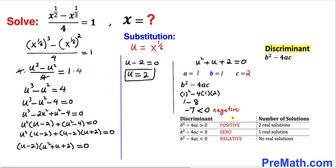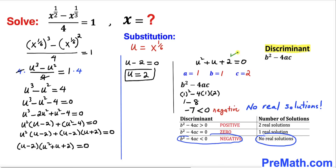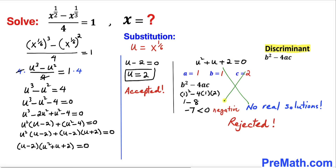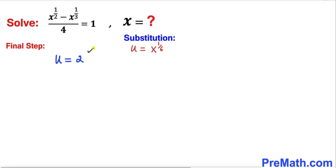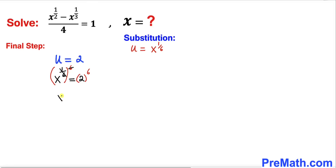Since the discriminant is negative 7, which is less than zero, there are no real solutions from the quadratic equation. We reject that case and accept u equals 2. Since u equals x^(1/6), we write x^(1/6) equals 2. Raising both sides to the power of 6, the exponents cancel and we get x equals 2^6, which equals 64.